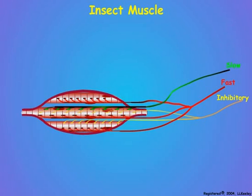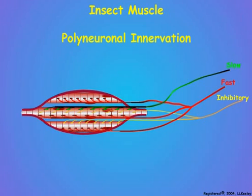Unlike vertebrate muscle fibers that are controlled by a single neuron, insect muscle fibers may have polyneuronal innervation. Polyneuronal innervation means that the contraction of a single insect muscle fiber may be controlled by one neuron, two neurons, or as many as three neurons.